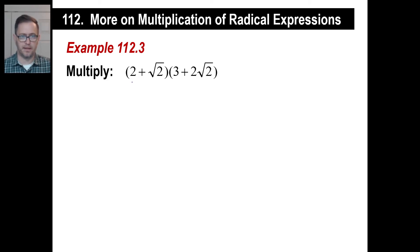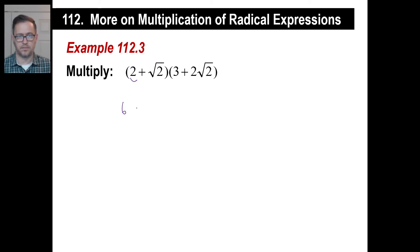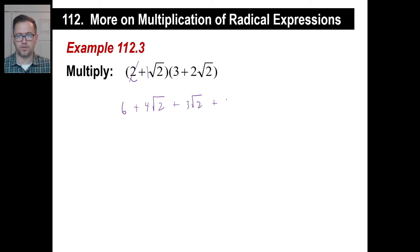Go ahead and distribute and see what you get — pause it and I'll catch up to you. We'll do 2 first: 2 times 3 is 6. Then 2 times 2 square root of 2 is 4 square root of 2. Then we have 3 square root of 2 from multiplying square root of 2 by 3. And then 1 times 2 is 2, and the square root of 2 times the square root of 2 is just 2.